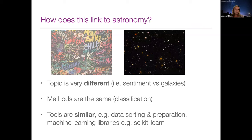How does this link to astronomy? The topic is entirely different — one looks at human sentiment, the other at galaxies — but the methods are very much the same: this is classification. Using machine learning classification, you can either classify a sentiment or classify a galaxy. All the ways of sorting out the data have quite a lot of similarity — a lot of preparation of the data, sorting and cleaning, and of course the application of these machine learning libraries is the same.